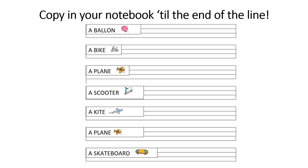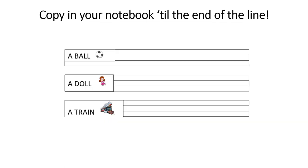A balloon, a bike, a plane, a scooter, a kite, a plane, a skateboard. Dakle, napiši ove riječi do kraja retka. A ball, a doll, a train. Također ih napiši do kraja retka.